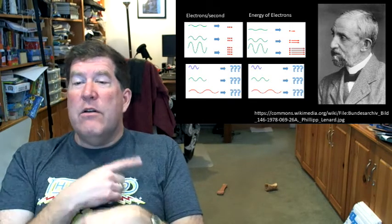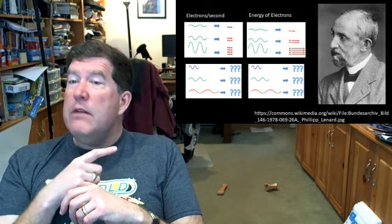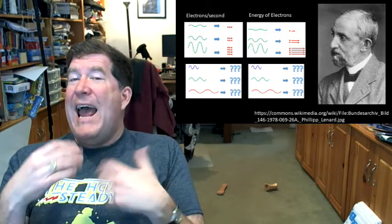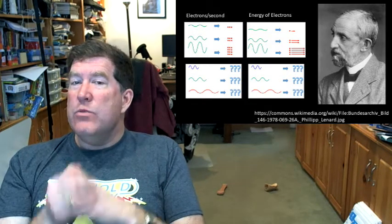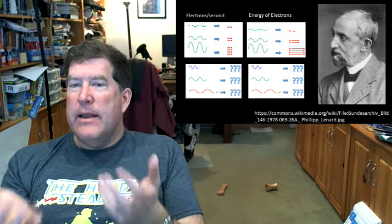And so physicists started to look at it, like this guy here is Philip Lenard, who was kind of a terrible person, but did some really pioneering experiments that nailed this down, and showed what actually happens in these cases. When you do these experiments, and you vary these parameters, what is the thing that happens?